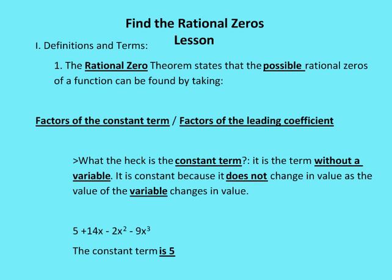So let's talk about the rational zero theorem. The rational zero theorem states that the possible rational zeros of a function can be found by taking the factors of the constant term over the factors of the leading coefficient.